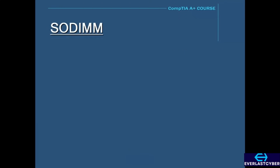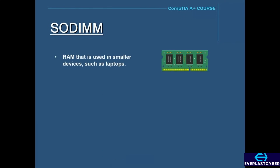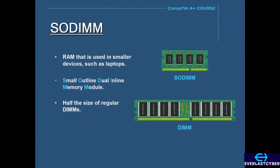The kind of RAM used in smaller devices such as laptops is called SODIMM, which stands for Small Outline Dual Inline Memory Module. SODIMMs are roughly half the size of regular DIMMs, and like DIMMs used in desktops, SODIMMs also come in different types such as DDR, DDR2, and DDR3. So if you plan on adding RAM to your laptop, you need to make sure you install the correct type, because the different levels of DDR in SODIMMs are not compatible with each other.